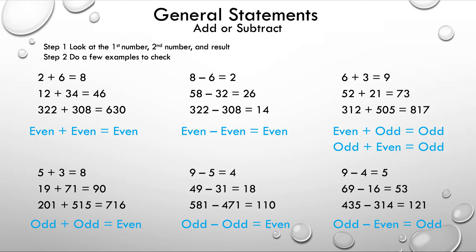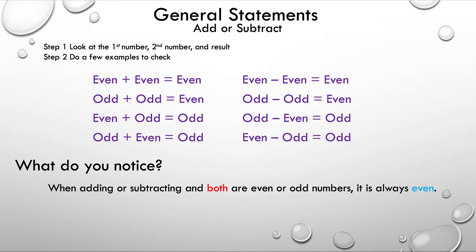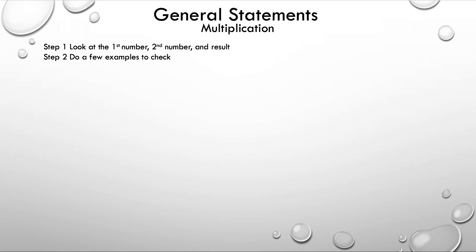You may also be wondering what happens if you have even minus odd — well, you get an odd number still, and I'll leave that for you to verify. Now let's take a look at all these general statements and see what you notice from all eight. The first thing you could notice is: when adding or subtracting and both numbers are even or both are odd, the result is always even. The next thing: when adding or subtracting with one even and one odd number, the result is always odd. Now let's move on to multiplication.